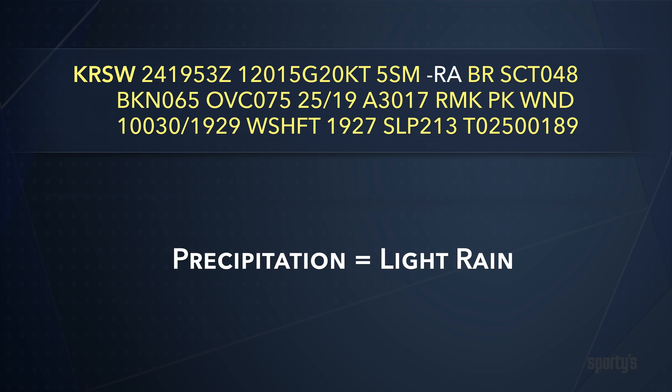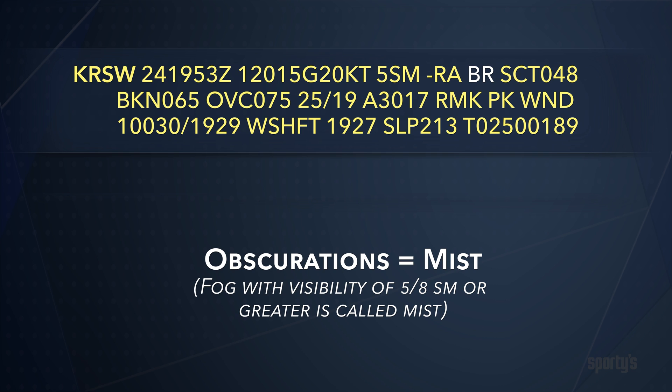The next group shows precipitation. Light rain is apparent in this observation. RA indicates rain. The minus sign modifies this entry to show the rain is light. Precipitation is followed by obscurations. Our METAR is reporting mist, as shown by the non-intuitive letters BR, a French abbreviation. For aviation weather reporting purposes, any fog with a visibility of five-eighths of a mile or greater is no longer fog — it's called mist.